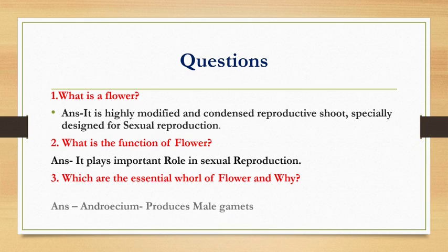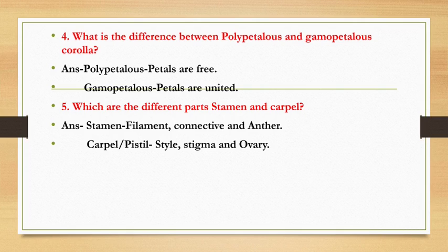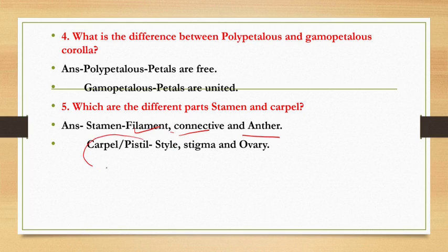Which are the essential whorls of the flower? Androecium and gynoecium — androecium because it produces the male gametes, gynoecium because it produces the female gametes. What is the difference between polypetalous and gamopetalous corolla? Polypetalous: petals are free; gamopetalous: petals are united. Which are the different parts of stamens and carpels? Stamens consist of filament, connective, and anther. Carpel, also called pistil, consists of style, stigma, and ovary.